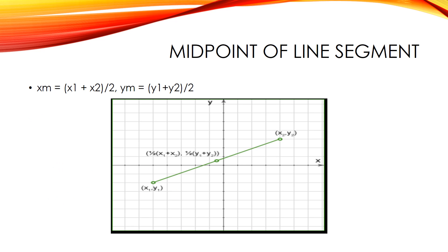Midpoint of a line segment: a line segment on the coordinate plane is defined by two endpoints whose coordinates are known. The midpoint of this line is exactly halfway between these endpoints and its location can be found using the midpoint theorem, which states: the X coordinate of the midpoint is the average of the X coordinates of the two endpoints. Likewise, the Y coordinate is the average of the Y coordinates of the endpoints.